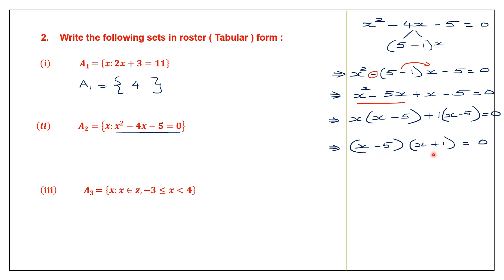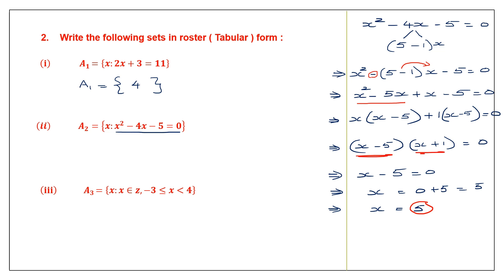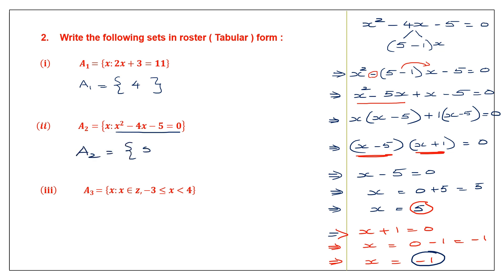So the set a2 equals {5, minus 1}. This is something new which you have not learned in detail yet, but I have tried to make it as simple as possible.